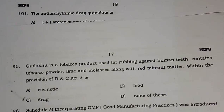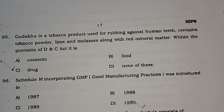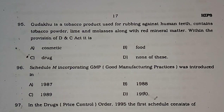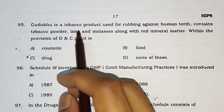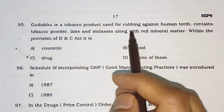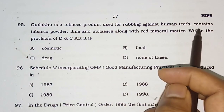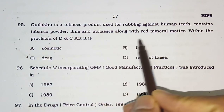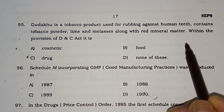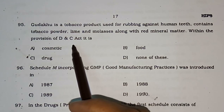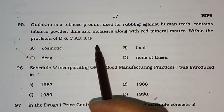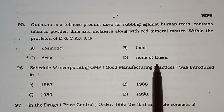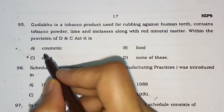Question number 95: Kudaku is a tobacco product used for rubbing against human teeth, containing tobacco powder, lime, molasses, and red mineral matter. Within the provisions of the Drugs and Cosmetics Act, it is classified as — cosmetic, food, drug, or none of these. The correct answer is drug.